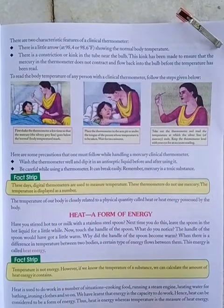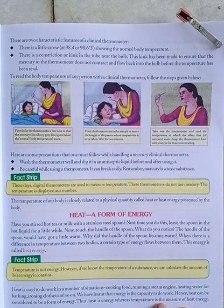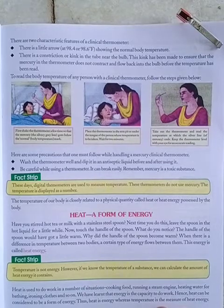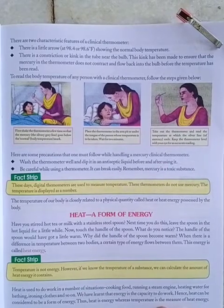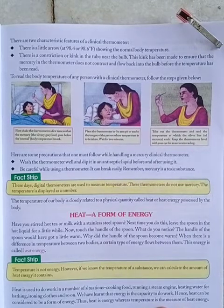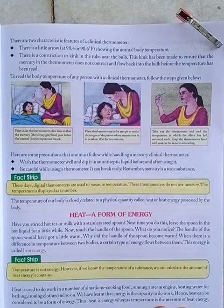There are two characteristic features of a clinical thermometer. There is a little arrow showing the normal body temperature. There is a constriction or kink in the tube near the bulb. The kink has been made to ensure that the mercury in the thermometer does not contract and flow back into the bulb before the temperature has been read.